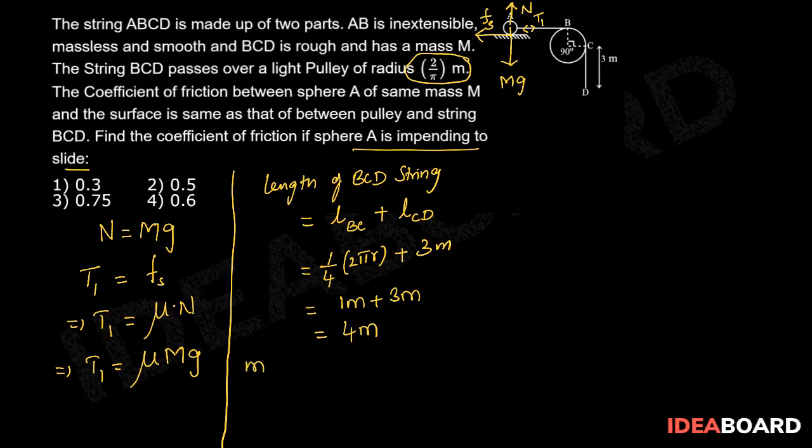Mass of BCD string is given as capital M. So its linear density lambda will be equal to M upon 4.